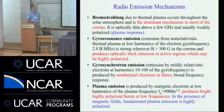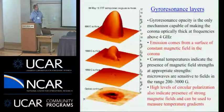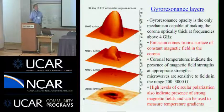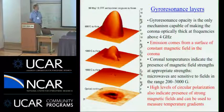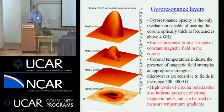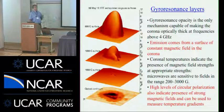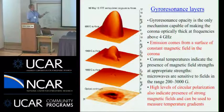We have four radio emission mechanisms we understand pretty well. I'll focus on gyroresonance, which is emission at low harmonics of the electron gyrofrequency. What we observe with a radio telescope when we can image this are surfaces of constant magnetic field. This figure shows three values from a nonlinear force-free extrapolation — you can see how the surface changes as the magnetic field strength value changes. We can use this technique to make coronal magnetograms.